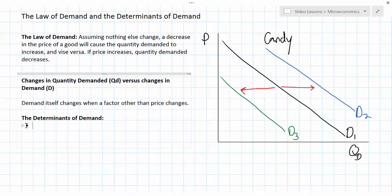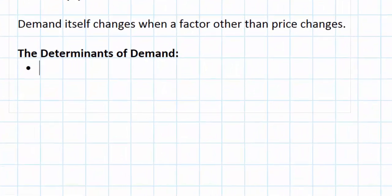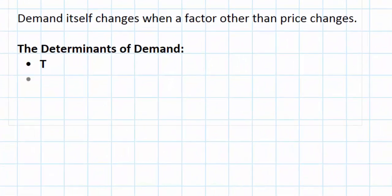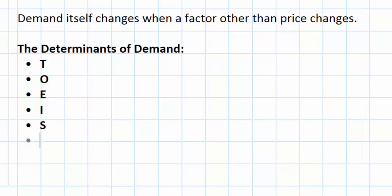I like to use an acronym to help remember the different determinants of demand. The acronym goes like this: T, O, E, I, S, and another S — TOEISS. Let's go through each of these letters and learn how it helps us to understand the factors that can cause a shift in the demand for a good.